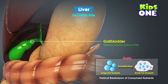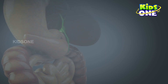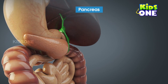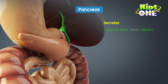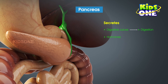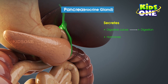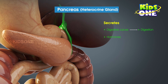Now is the time to break down the nutrients completely, and the pancreas comes to the rescue. The pancreas is one of the most important glands in the human body. It helps in secreting digestive juices as well as hormones. The pancreas is a heterocrine gland — it performs the functions of both endocrine and exocrine glands.